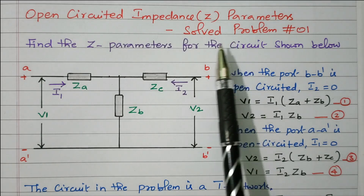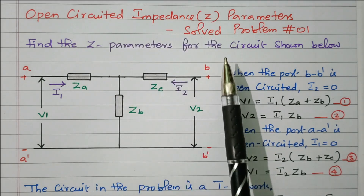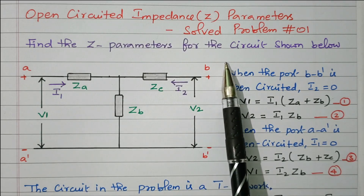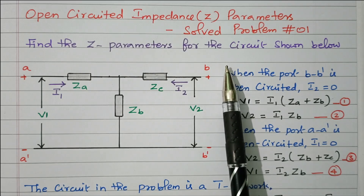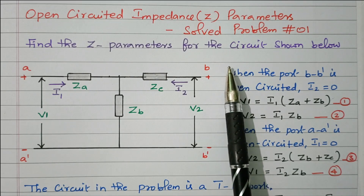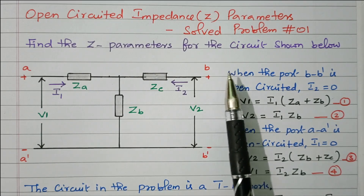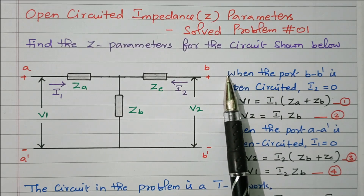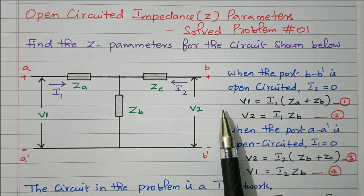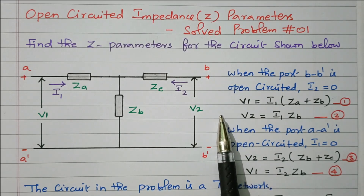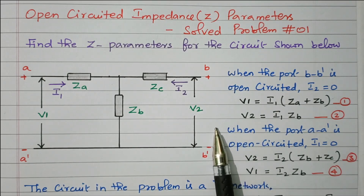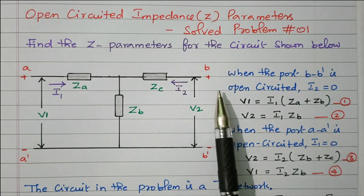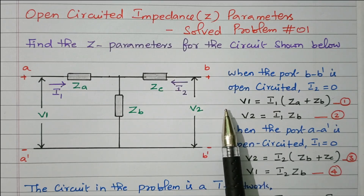Now we will go to the topic: Solved Problem 1, open circuit impedance Z parameter. We know that Z parameter is an open circuited parameter — one port is kept open and the parameter is defined. Z11 is the open circuit input impedance, Z22 is the open circuit output impedance, Z21 is the open circuit forward transfer impedance between input and output. Similarly, Z12 is the open circuit reverse transfer impedance. These four parameters — Z11, Z22, Z12, Z21 — we need to find.